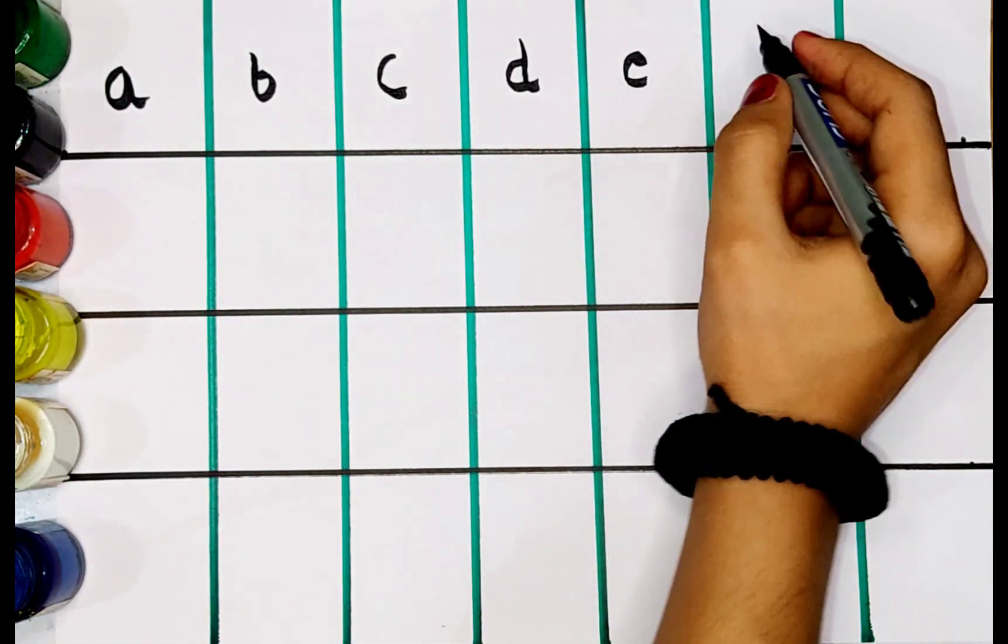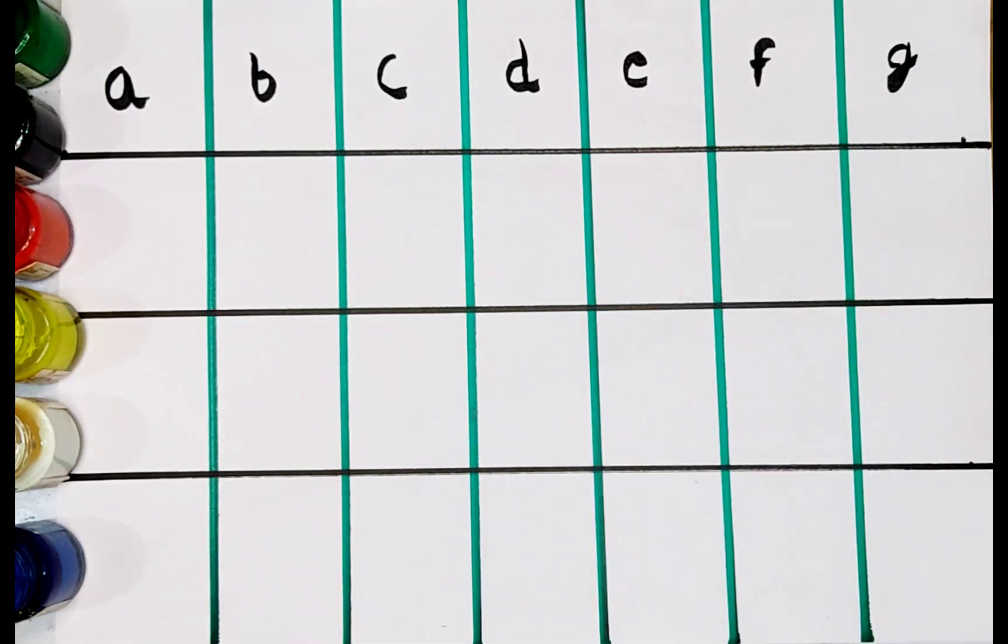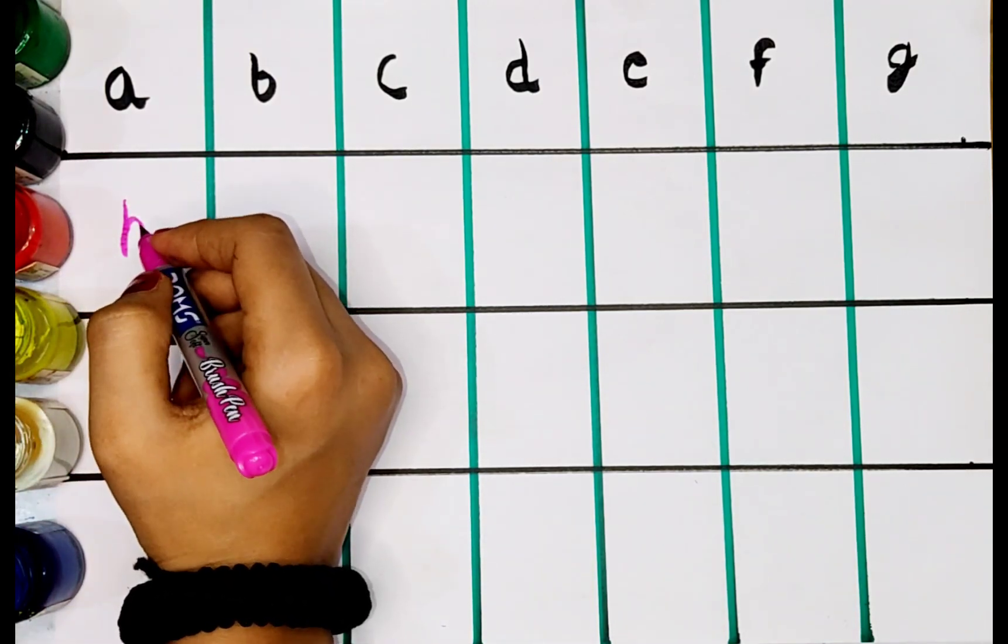E. E for elephant. F. F for fish. G. G for grapes. H. H for horse.